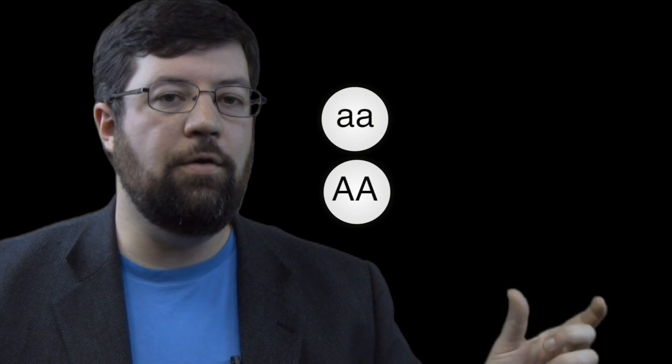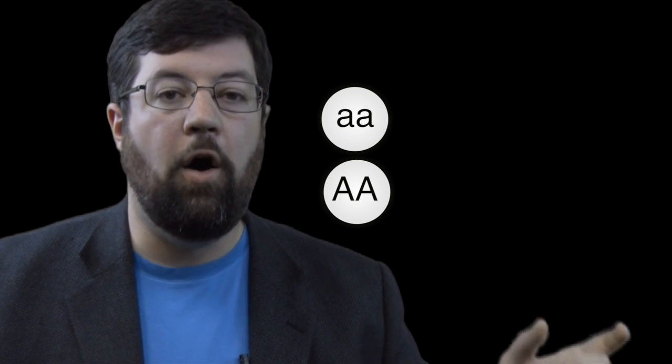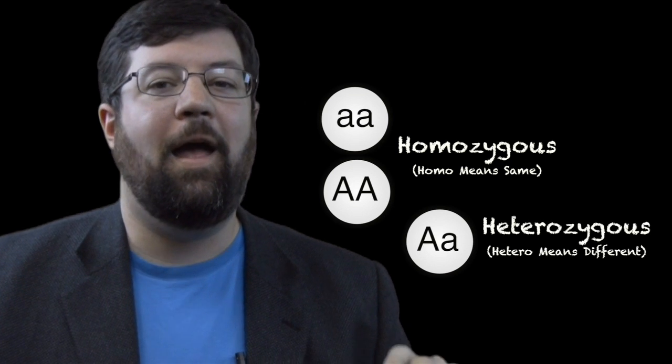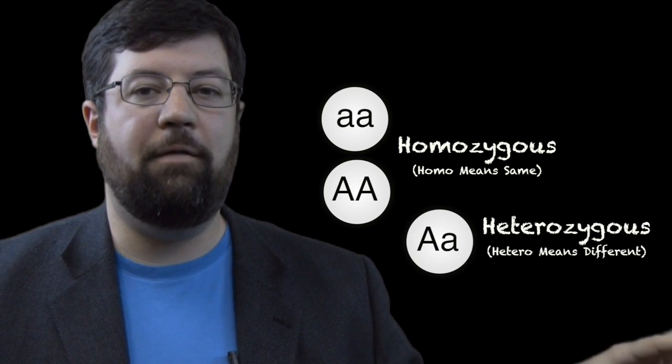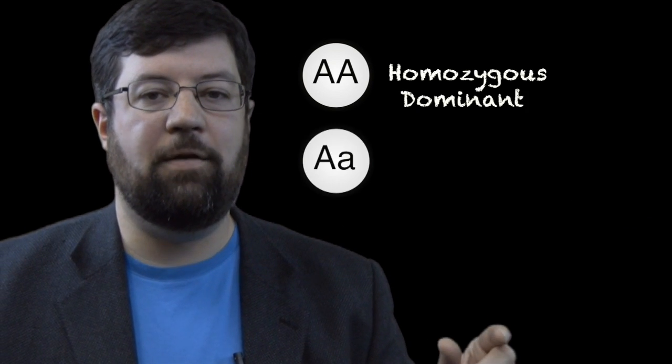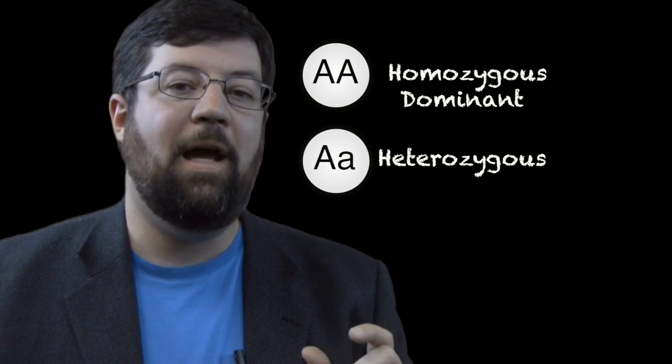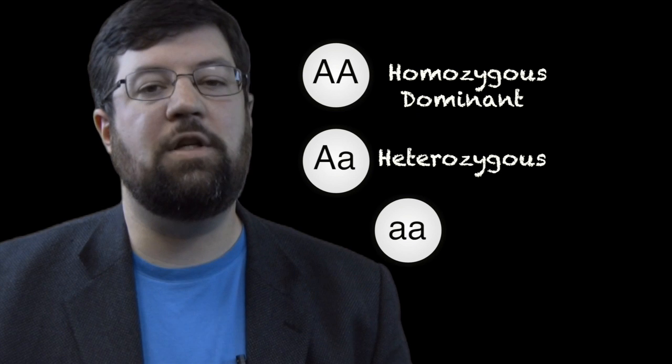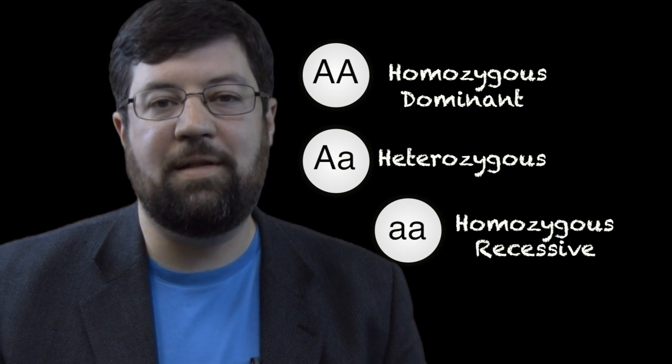And by the way, when you have two copies of the same allele on a given gene, we call that homozygous. And when you have one copy of each, we call it heterozygous. And so in this example here, you have a normal with two copies of the normal gene, we call that homozygous dominant. And when you have obviously one copy, we call that a heterozygous. And then the albino has two copies of the little a, or the recessive gene, we call that homozygous recessive.